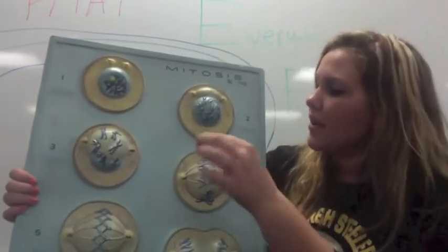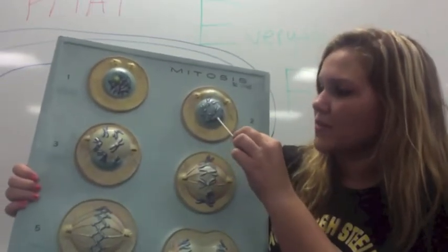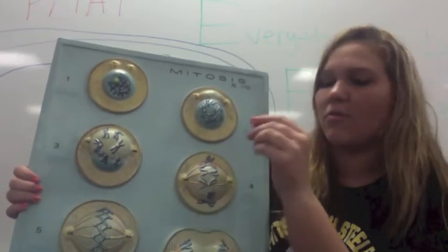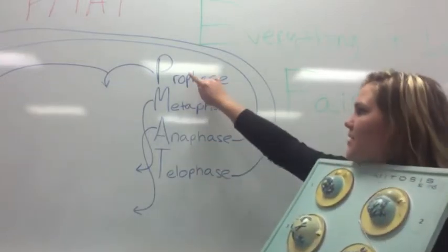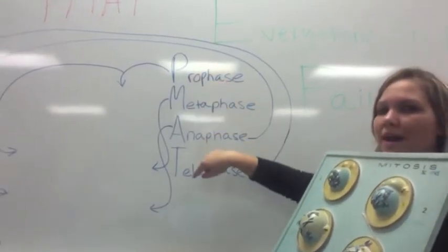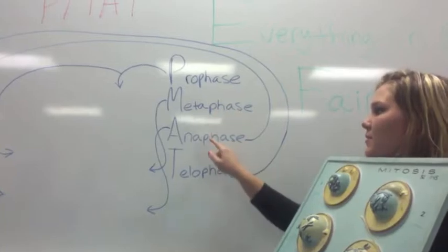The next one is prophase, and the way that you can remember all the steps of mitosis is by this acronym, PMAT. It stands for prophase, metaphase, anaphase, and telophase, however you want to pronounce it.